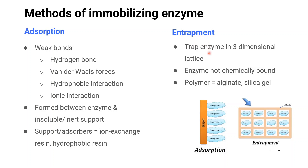Entrapment: enzymes are trapped in a 3D lattice. They are trapped in a support or inside fibers. Substrates and products can pass through but not the enzymes. Enzymes are trapped within a confined space or network, and are not chemically bound. The polymers used can be alginate, silica gel, or polyacrylamide gel. This method is fast and cheap but has poor diffusion limitation.